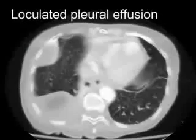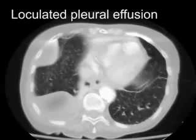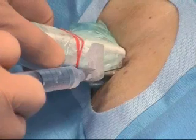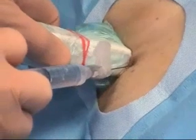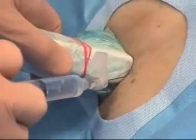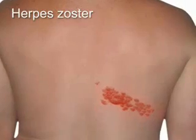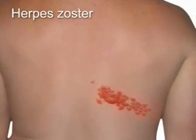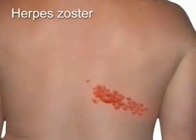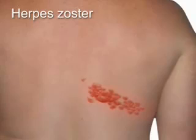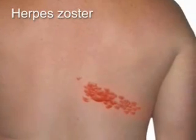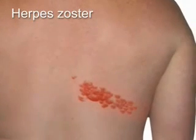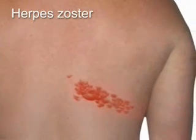In patients who have small or loculated effusions, the procedure should be performed by experienced operators, ideally with real-time imaging guidance. The thoracentesis needle should not pass through sites of cutaneous infection such as cellulitis or herpes zoster.